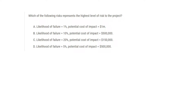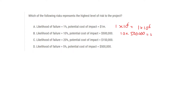For example, in this question: which of the following risks represents the highest level of risk of the project? Risk of the project is nothing but likelihood multiplied by impact. So first one: 1 × 1 million = 1 × 10^6. Second one: 10 × 5 lakhs = 5 × 10^6.